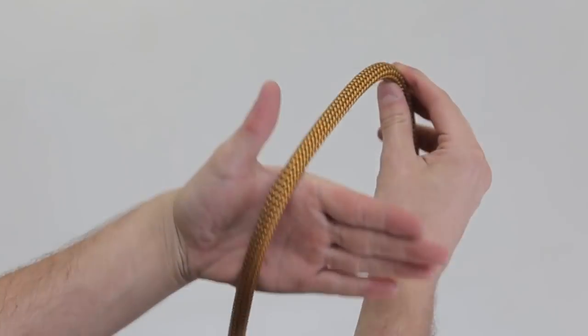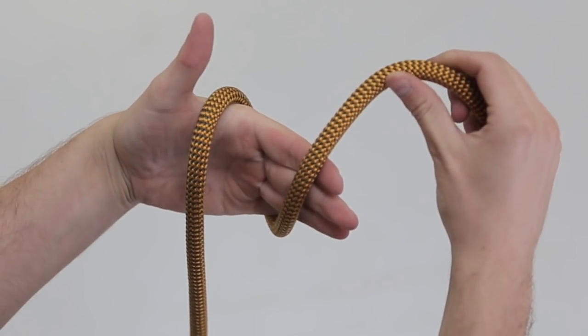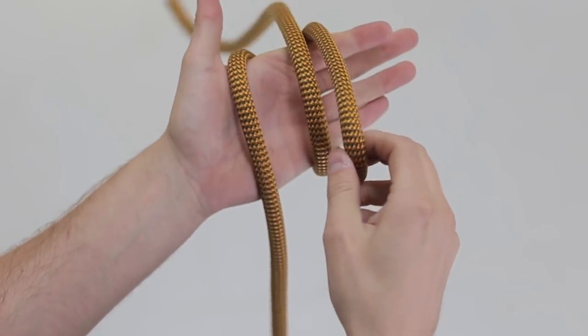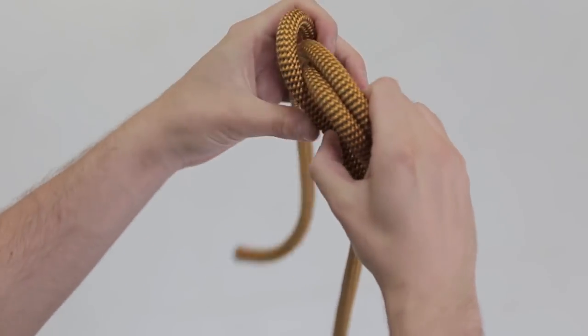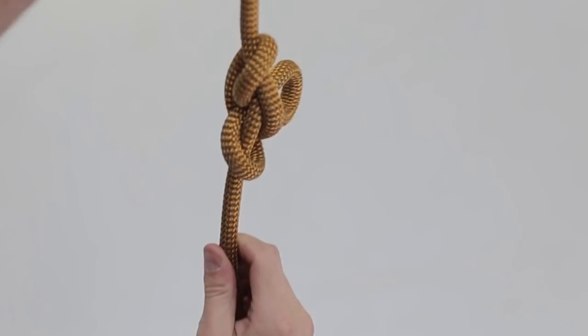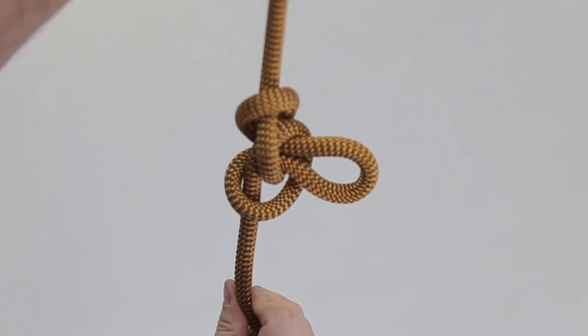Wrap the rope around your hand twice. At the end of turn one, position the rope close to your fingertips. Continue around and complete turn two back near your thumb. Pick up the turn near your fingertips, wrap it around the other two turns, slide the knot off your hand, and tighten by pulling on the loop and the ends.